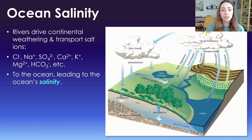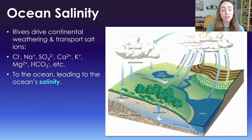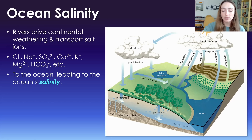The ocean is saline because rivers deliver salts and nutrients to the ocean from terrestrial systems. Essentially, continental weathering by rain and rivers and other terrestrial hydrosphere systems leads to the dissolution and transport of salt ions — like chlorine, sodium, sulfate, calcium, potassium, magnesium, bicarbonate, and others — to the ocean, which leads to its salinity.